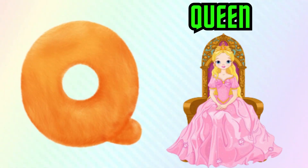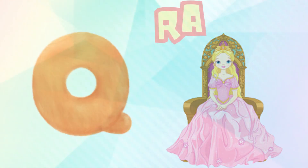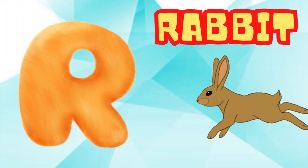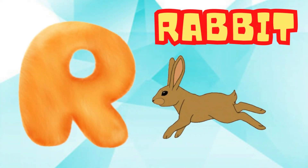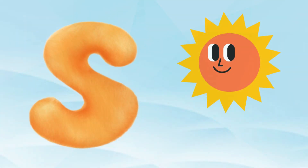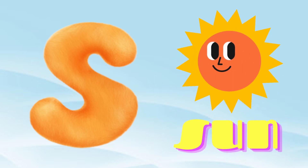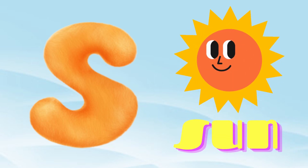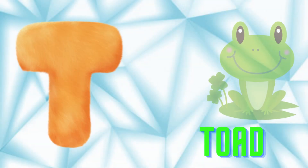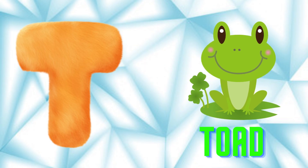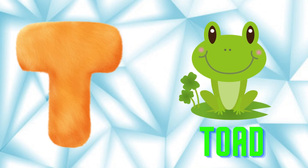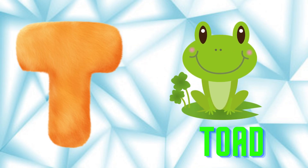Q is for Queen, Q-Q-Queen. R is for Rabbit, R-R-Rabbit. S is for Sun, S-S-Sun. T is for Toad, T-T-Toad.